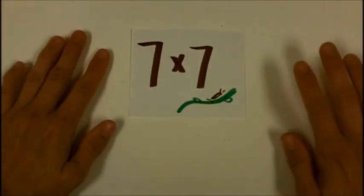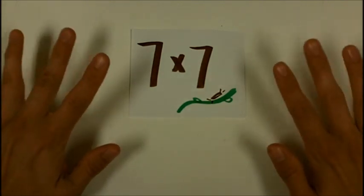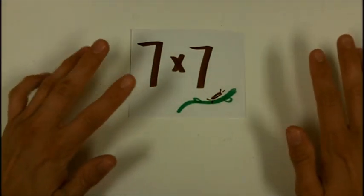Seven times seven. Ready? Go. Seven times seven. Roach is on a vine. Yucky and scary. All 49.